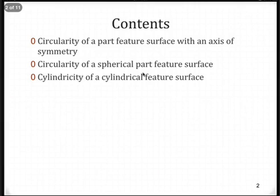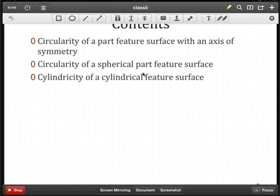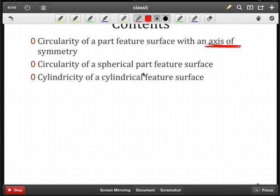What we'll look at is circularity of a part feature surface with some type of axis of symmetry. Clearly, if there is going to be circularity, you're going to need an axis to describe what it's circular about. And so an axis is going to play a central role there.